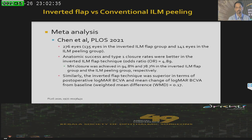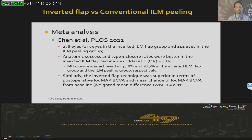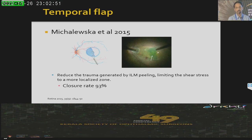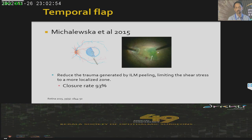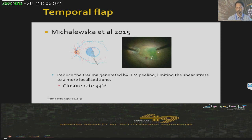Meta-analysis has clearly shown that when comparing inverted flap versus ILM peeling alone in large holes, the inverted ILM flap showed superiority in terms of anatomical and visual outcomes. Michalewski in 2015 introduced the concept of just a temporal peel — instead of peeling across the fovea, he just created a temporal flap, left it there, and did a fluid-air exchange. The closure rates were excellent.